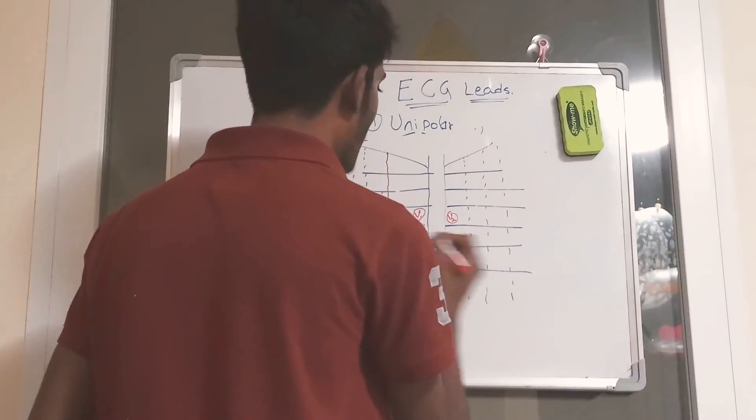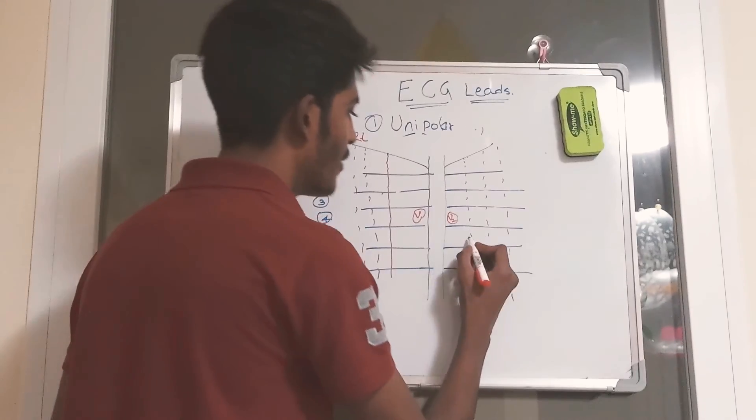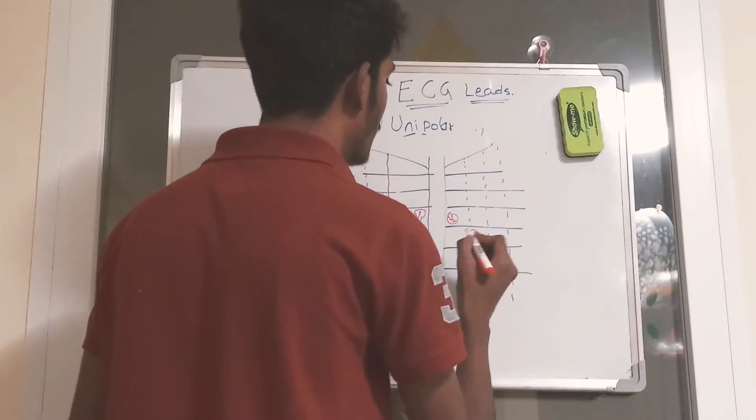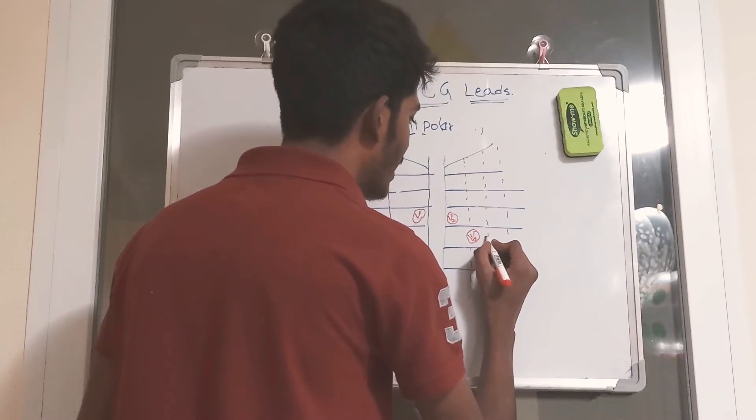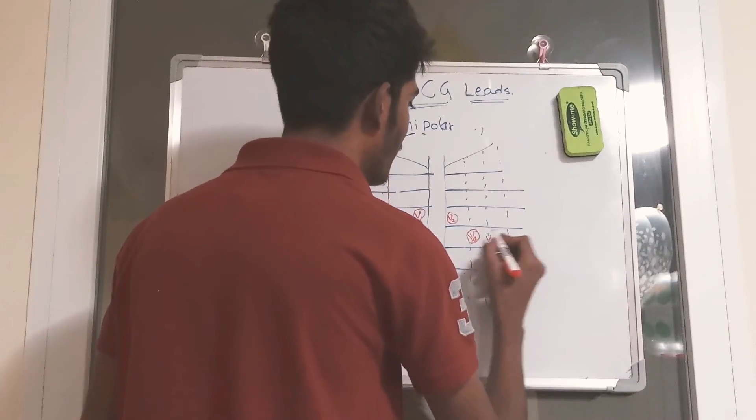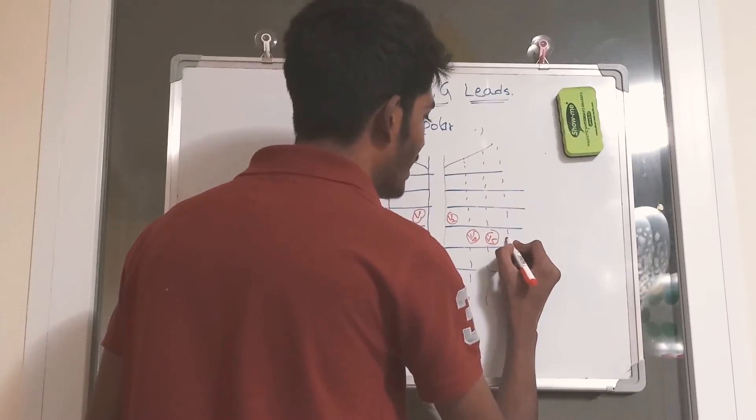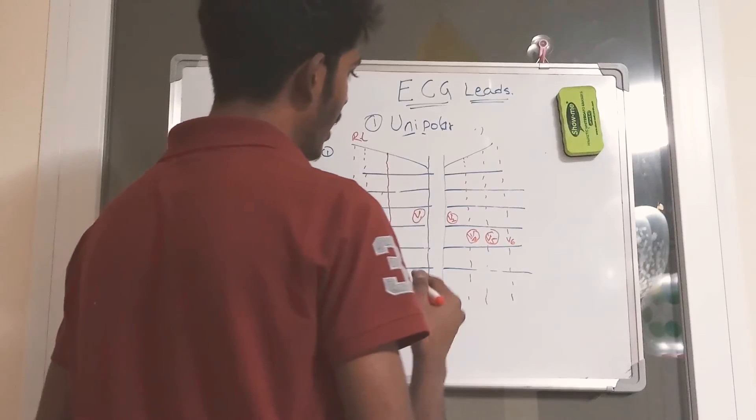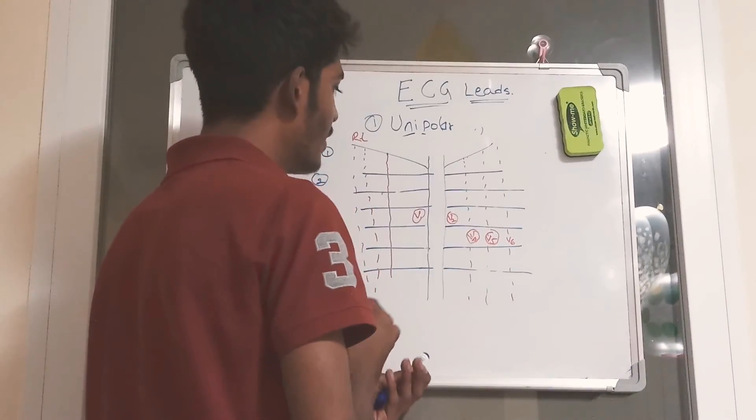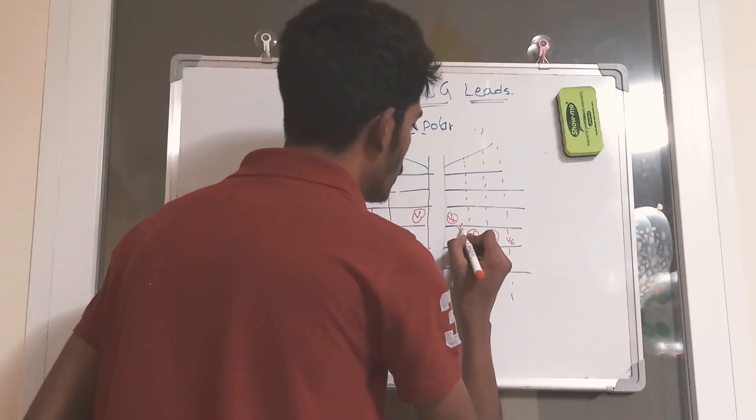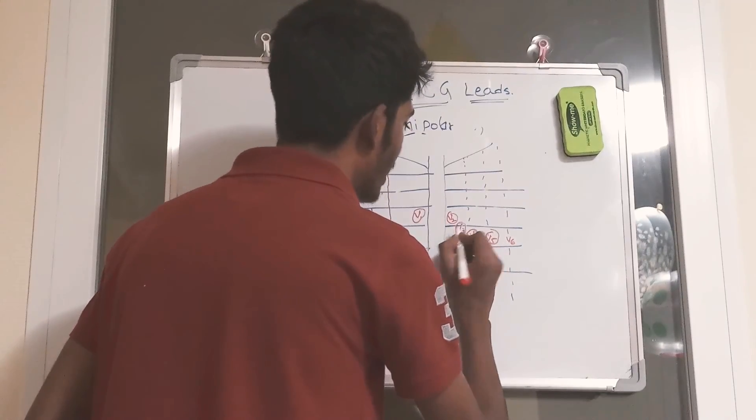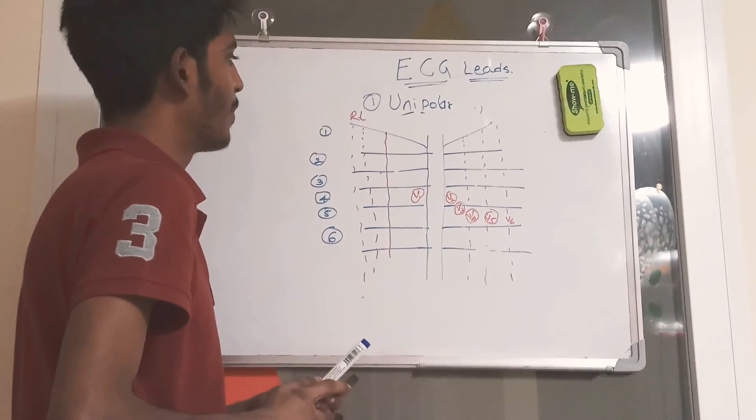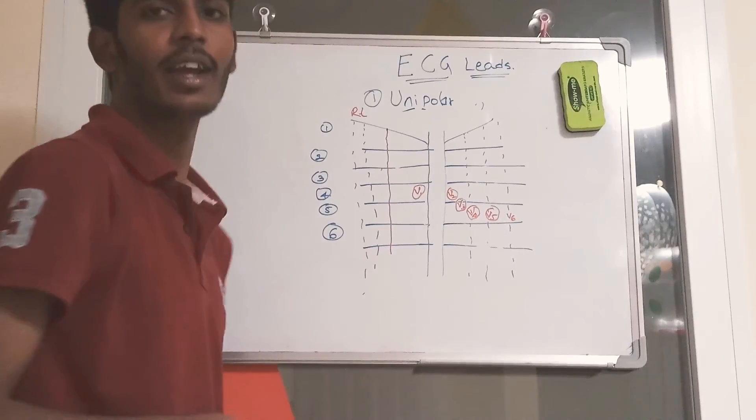V4 is placed on the mid-clavicular line on the left side. Here is V4. Let's go to V5, V5 is placed in the anterior axillary line, and V6 is placed on the mid-axillary line, on the fifth intercostal space. Now the leftover one is V3. V3 is just placed in the middle of V2 and V4. These are the series of chest leads which we connect on the body. These are unipolar chest leads. Thank you.